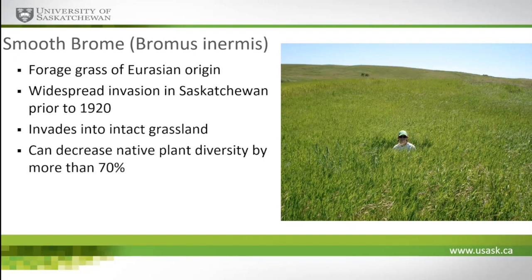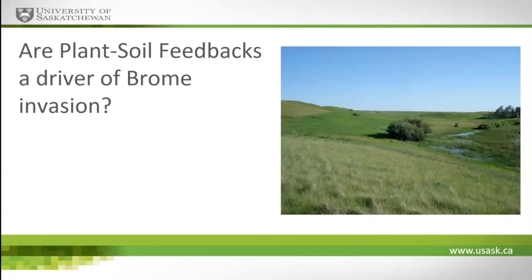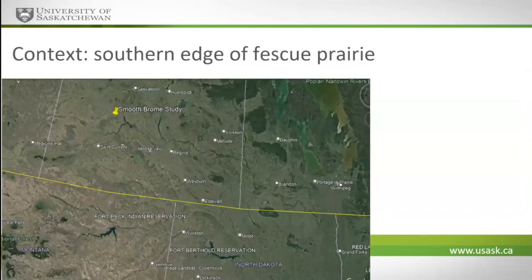So it's a problem, and we've been seeking to understand how brome functions and why it's so tenacious once it gets in. This particular study uses a small ungrazed piece of grassland as our primary study site, about 120 kilometers south of Saskatoon — right on the margin of mixed grass prairie and fescue prairie, at the northern edge of the Great Plains. There's a lot of agriculture there — anywhere from 70 to 90 percent land conversion — so we have pretty small remnants left.